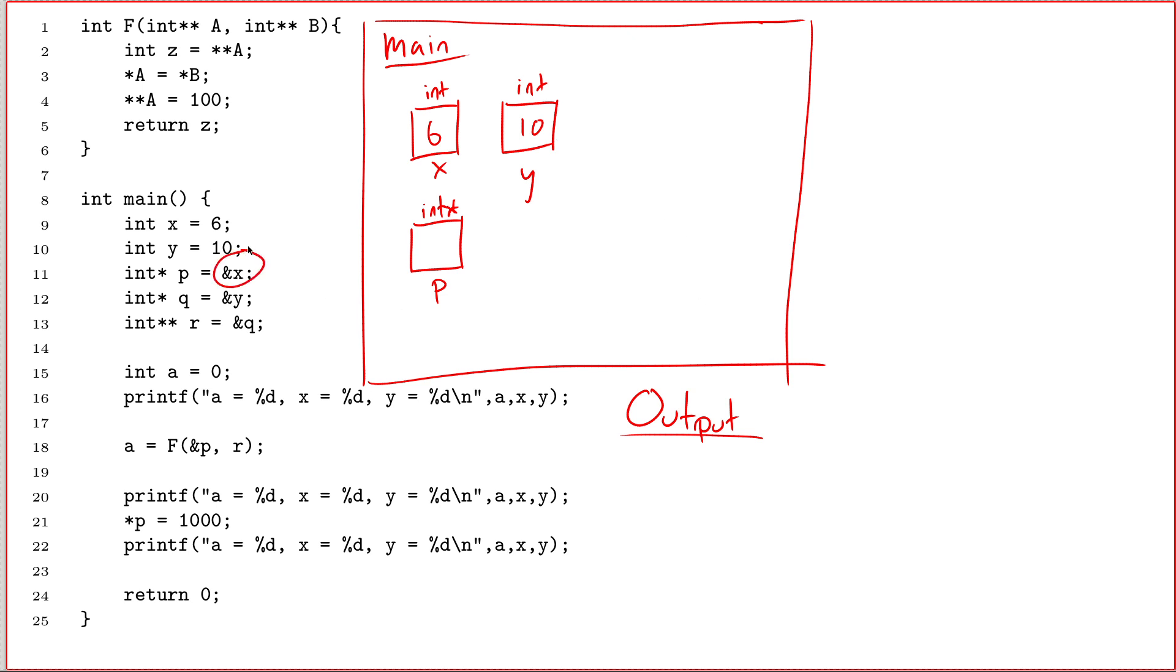The initial value of int star p - p is a pointer to int. The value of it is ampersand x, arrow pointing at x. You can verify to yourself that the type of this is int star, because x is an int, so if I create an arrow pointing at it, that's an int star. And p is an int star, so I am allowed to do that assignment. So I give p an arrow pointing at x.